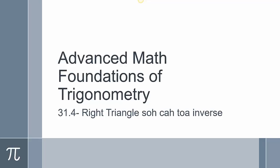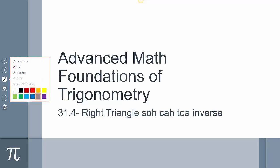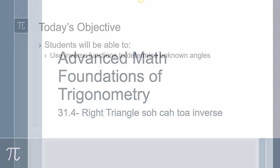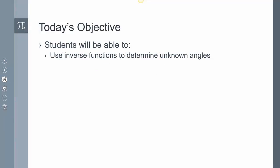Today is section 31-4. We're going to be looking at right triangle trigonometry again, but this time we're going to use our three trig ratios and examine the inverse. We're going to use those inverse functions to determine unknown angles.